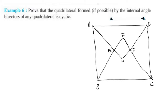Let's prove it. The angle A bisector is A-H, the angle B bisector is B-F, the angle C bisector is C-F, and the angle D bisector is D-H. To prove cyclic, we need to show the opposite angle sum is 180 degrees. The step of the cyclic quadrilateral is that the opposite angle sum is 180 degrees.